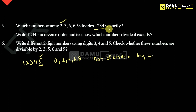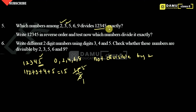Next we check divisibility by 3. The rule is: find the sum of all the digits. So 1 + 2 + 3 + 4 + 5: 1+2=3, 3+3=6, 6+4=10, 10+5=15. We get 15, and 15 divided by 3 is 5. So 12345 is divisible by 3.